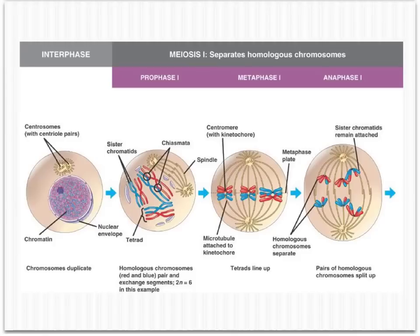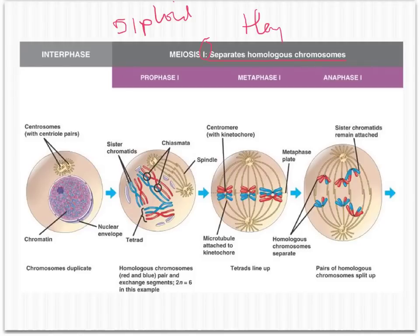Now we can take a look at the stages of meiosis. Many of these stages look almost identical to the stages of mitosis. We spent a lot of time on mitosis so that we could move quickly through meiosis. Keep in mind there are two divisions in meiosis — we need to divide the cell twice. We're going to call the first division meiosis I. In meiosis I, we're going to be separating homologous chromosomes, moving from a diploid cell to a haploid cell. That's our goal in meiosis I.